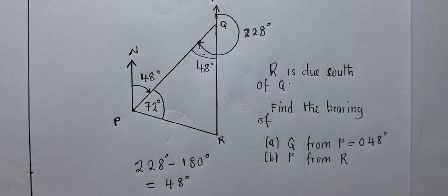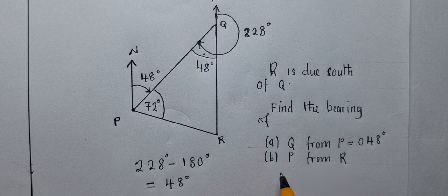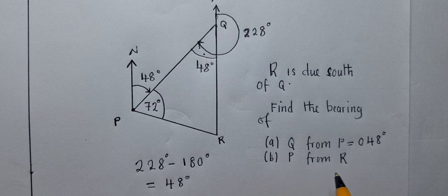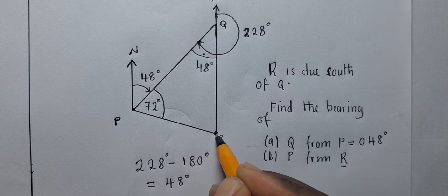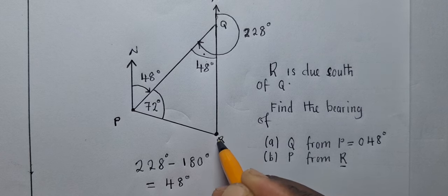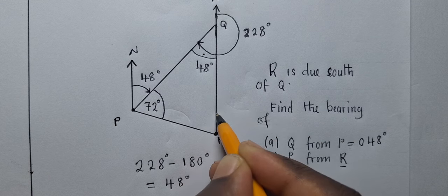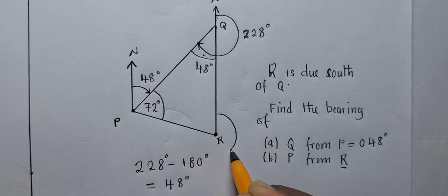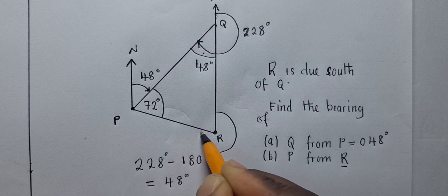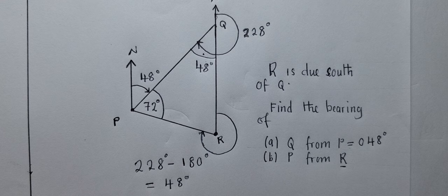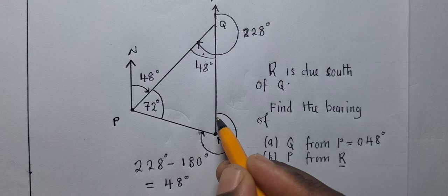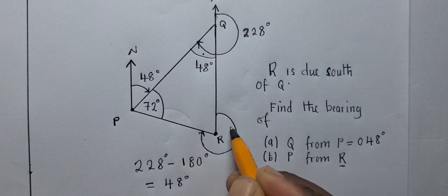For the next question, it's saying we find the bearing of P from R. So always you go to where it's saying from. So from R. R is right here. You do your north, of which our north has already been done. So we shall move like this, like this up until we touch the line that is joining the two P and R. So now this is the bearing we need.